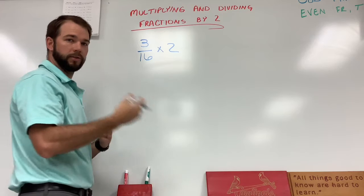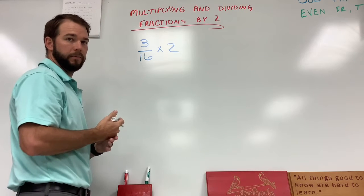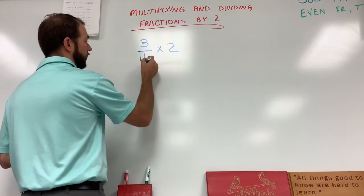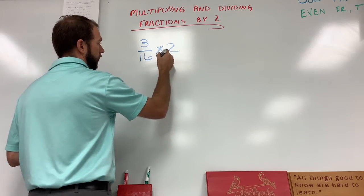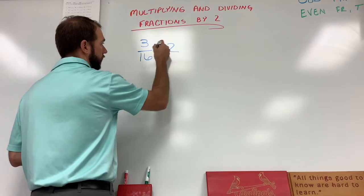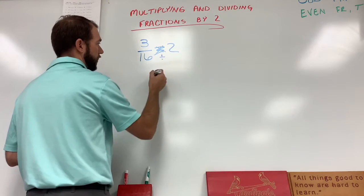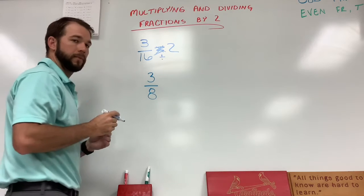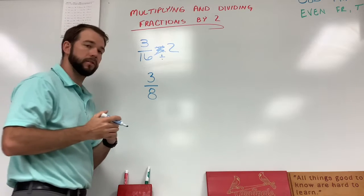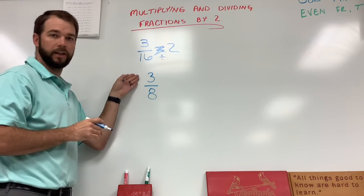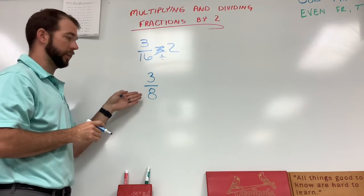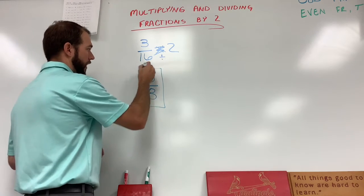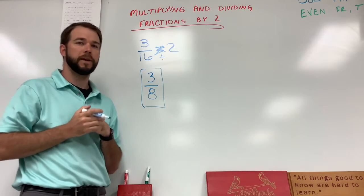When we multiply fractions by two, we divide the bottom number by two — so it's kind of the opposite. We take our bottom number, cross this out and put a division sign there. We divide that sixteen by two and we end up with three eighths. Remember the rule from adding and subtracting fractions: if we have an odd number on top and an even number on bottom, that means we're done. That rule only applies when we're talking about measurements.